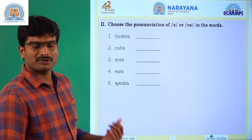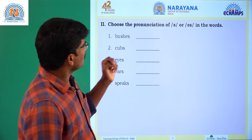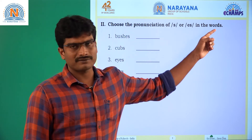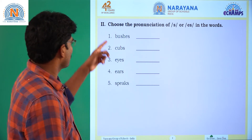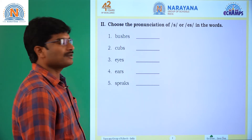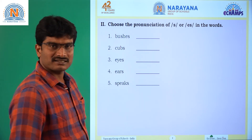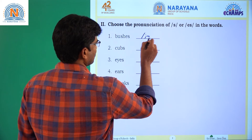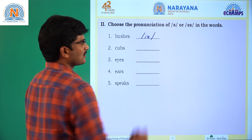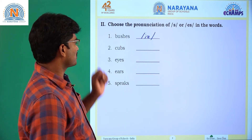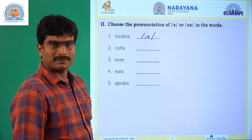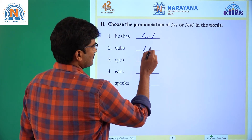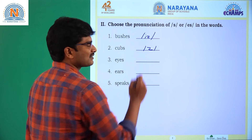Coming to the plurals. Roman number 2: choose the pronunciation of 's' or 'es' in the words — plural words. Question number 1: 'bushes.' Question number 2: 'cubs.' The sound is 'z' sound.